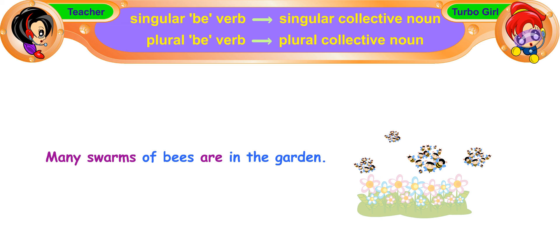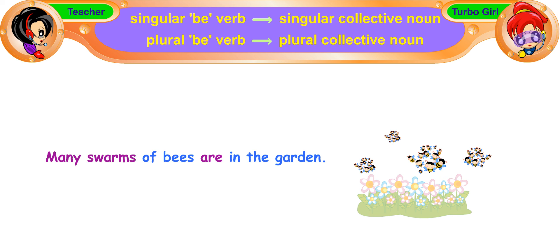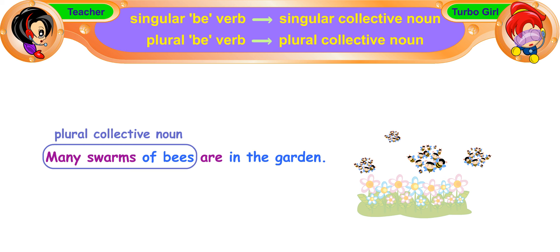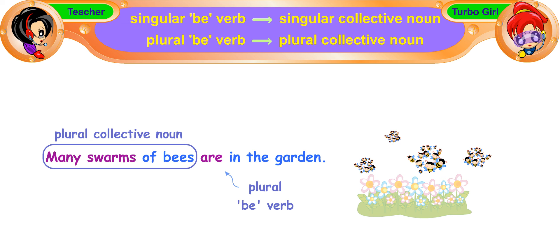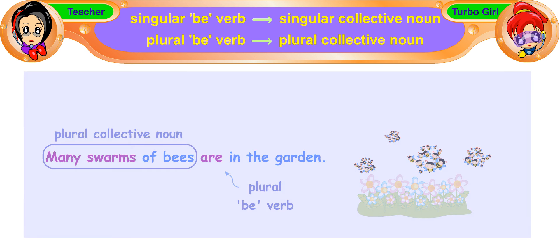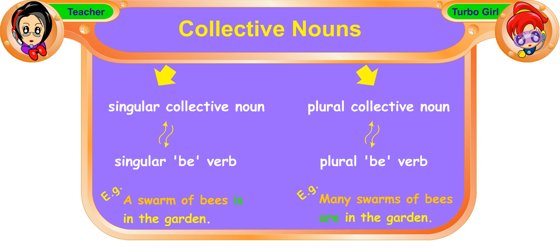In the next example, many swarms of bees are in the garden. Many swarms of bees is a plural collective noun, so we use 'are'. Very good, Turbo Girl. I'll see you next time.